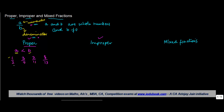If you were to ever divide a proper fraction, the value you get is always less than 1. The rule is very simple: because the numerator is less than the denominator, whenever you divide the numerator by the denominator, the number has to obviously be less than 1.